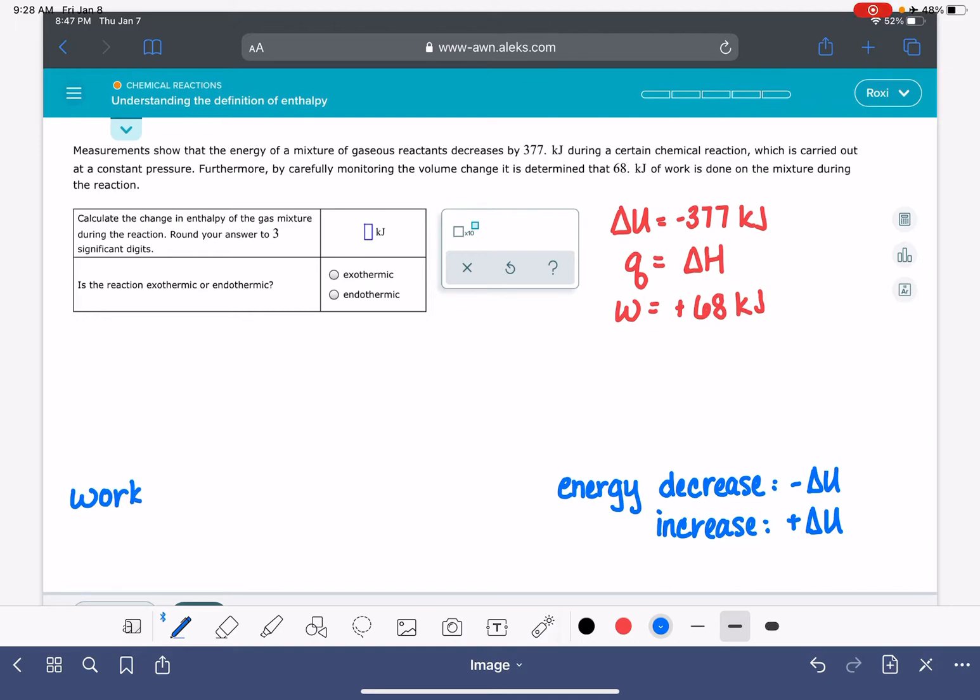So when work is done on the system, that means that we have a positive value of w. And when work is being done by the system, that means that the system is losing energy. So that would be a negative value of w.